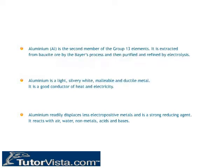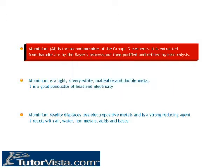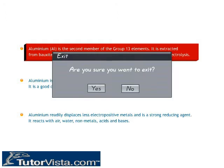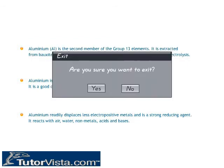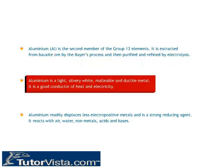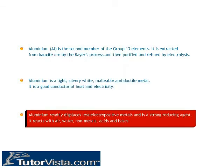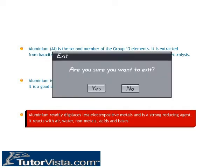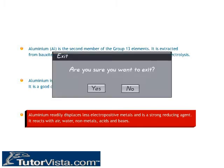Aluminium (Al) is the second member of the group 13 elements. It is extracted from bauxite ore by Bayer's process and then purified and refined by electrolysis. Aluminium is a light, silvery white, malleable and ductile metal, and a good conductor of heat and electricity. It readily displaces less electropositive metals and is a strong reducing agent. It reacts with air, water, non-metals, acids and bases.